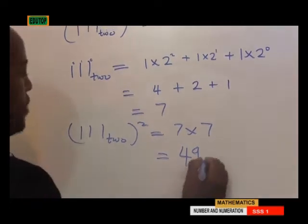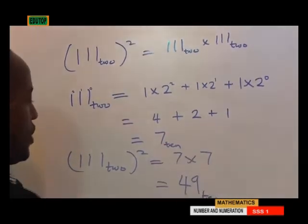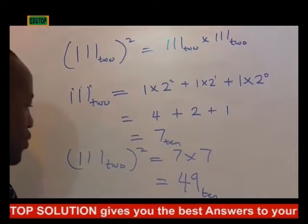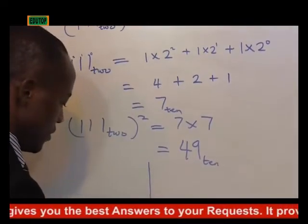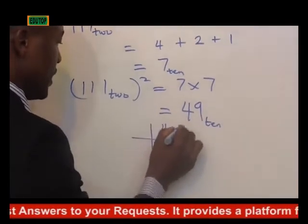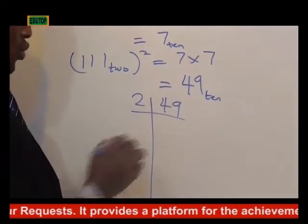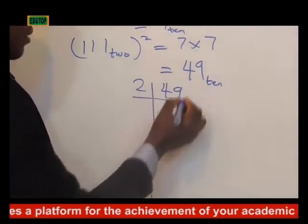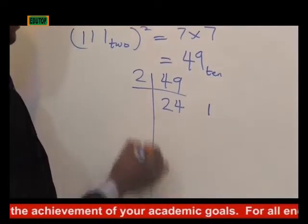Now we convert 49 to base 10. Now convert this — 49 in base 10 — back to base 2. We are having something like this: 49 divided by 2 will give us 24. 24 times 2 is 48. 49 minus 48 is 1. We are having 1 as a remainder.